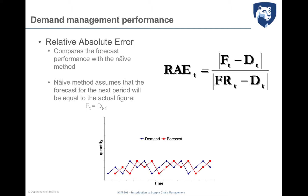Demand management and demand forecasting require effort from the company — time spent deciding the level of aggregation, deciding the model, hiring people, and so on. We are interested that our model, which comes from in-depth analysis, performs better than the most basic choice. In demand forecasting, the most basic choice is what is called a naive method. The naive method assumes that the forecast for the next period will be equal to the actual figure of the current period.